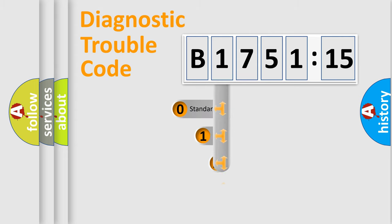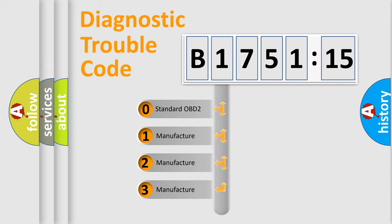Powertrain, Body, Chassis, Network. This distribution is defined in the first character code.